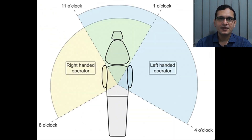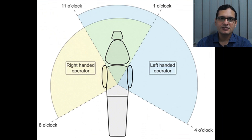Let's assume the correct position. For a right inferior alveolar nerve block injection, the right-handed clinician should sit at the 8 o'clock position facing the patient.